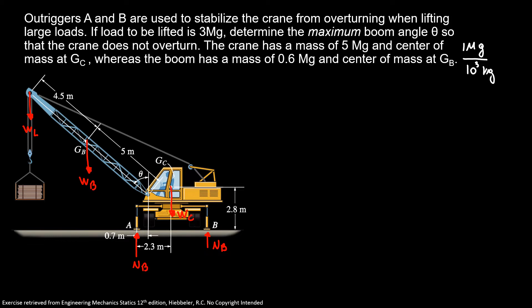Now we need to find the maximum boom angle. So when I have this condition to find the maximum boom angle, I know my normal B is virtually zero because when it's almost overturning, the point B loses the contact with the ground and I don't have my normal B anymore. So here we know that our normal B is virtually zero.